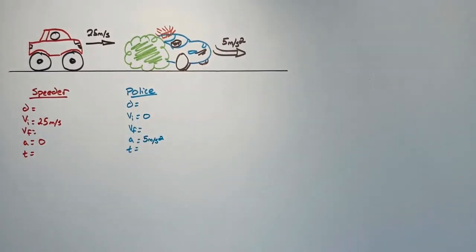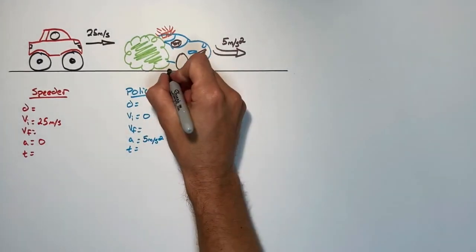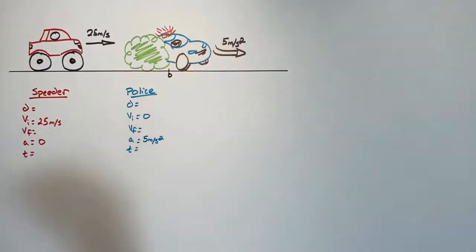Typically, when solving a problem with a single object, we need to know three of the five kinematic variables to solve the problem. In this problem with the speeder and the police car, we don't know three kinematic variables for either vehicle. So what we're going to do is look at the displacement as a function of time for each vehicle.